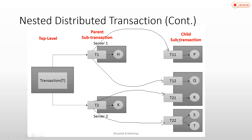All of these are called child transactions, or sub-transactions of the parent. This level is the parent level, and T is the top level. If we want to further divide a transaction, we could — for example, T11 could divide into another sub-transaction like T111 and T112.